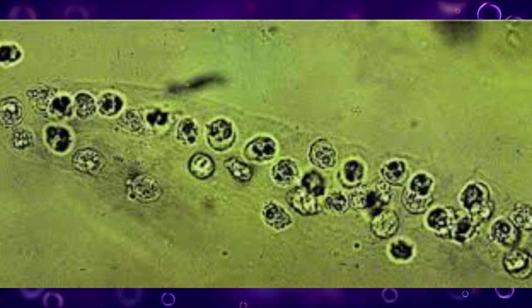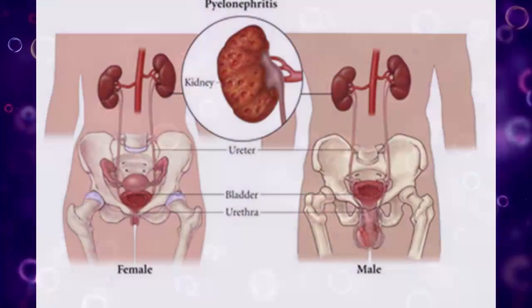White blood cell casts have white blood cells present within or upon the cast. These casts are typical for acute pyelonephritis, but they may also be present with glomerulonephritis, acute interstitial nephritis, and lupus nephritis.